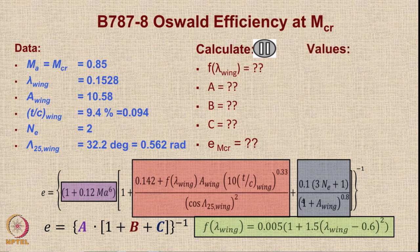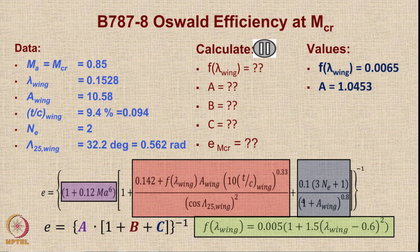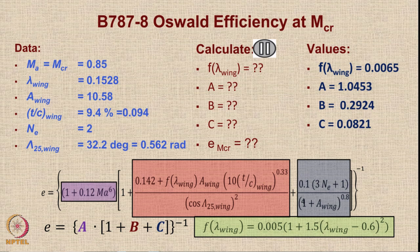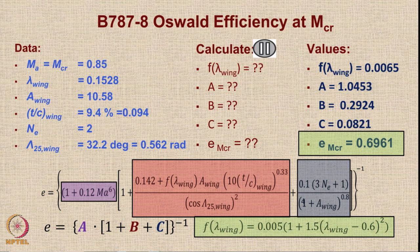F(lambda wing) turns out to be 0.0065. Term a = 1 + 0.12 × Mach^6 = 1.0453. Term b = 0.2924. Term c = 0.0821. Putting all these values together, the value of E turns out to be 0.6961. We need to remember this value because we will compare it with the quoted value later.